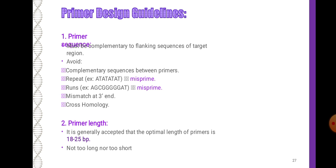Primer sequence guidelines: the primer must be complementary to the flanking sequence of the target region. Avoid complementary sequences between primers, repeat mismatches, primer-primer interactions, and runs of mismatches. Also avoid cross-homology.